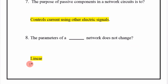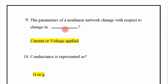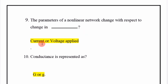The parameters of a linear network do not change. The parameters of a non-linear network change with respect to change in current or voltage applied. Conductance is represented as G.